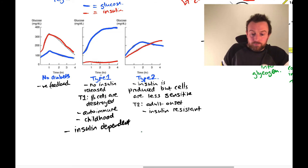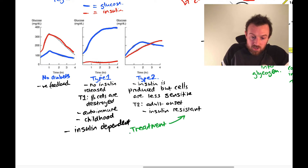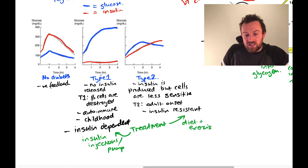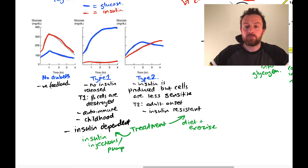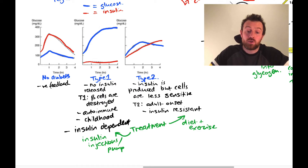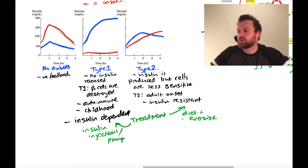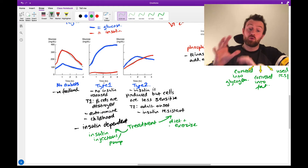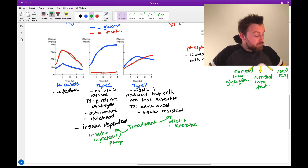In terms of treatment: type 1 requires insulin injections or an insulin pump. Type 2 is treated with diet and exercise; there are also medications that increase cell sensitivity to insulin, but you wouldn't inject insulin as a type 2 diabetic. There has been great success using strict calorie-controlled diets to control and even reverse type 2 diabetes.